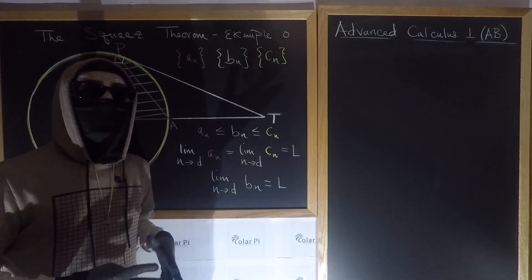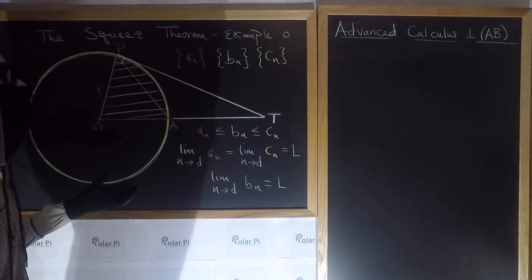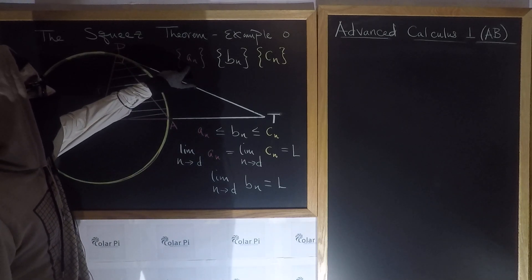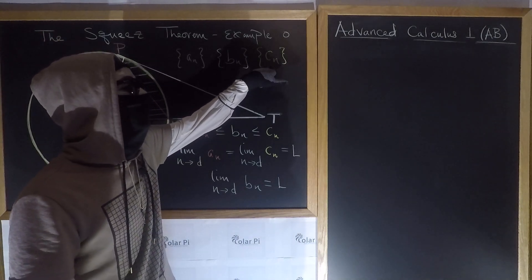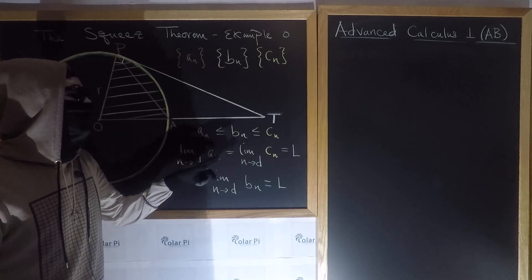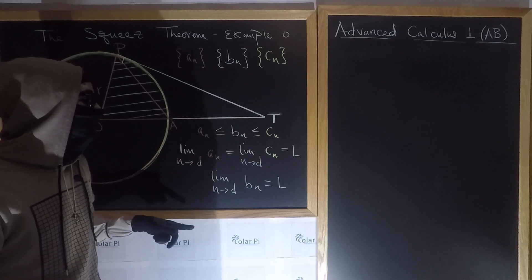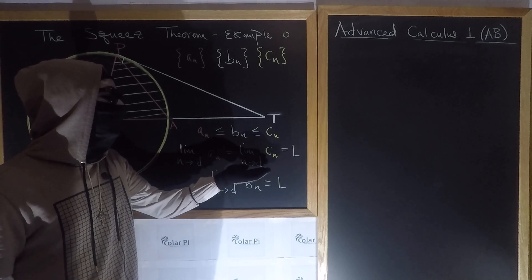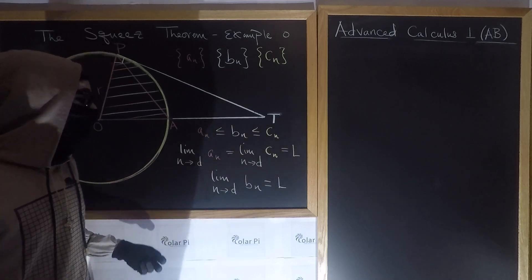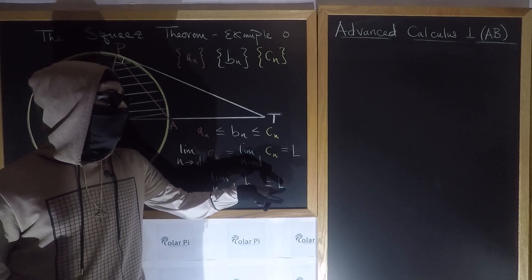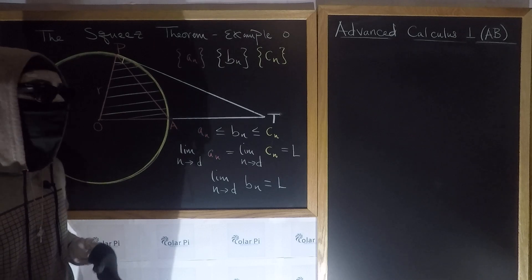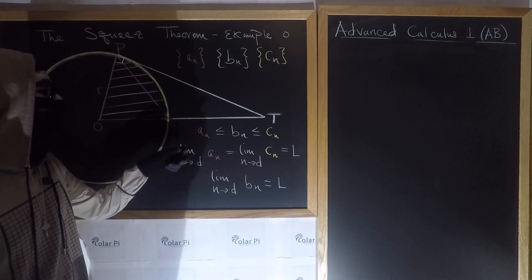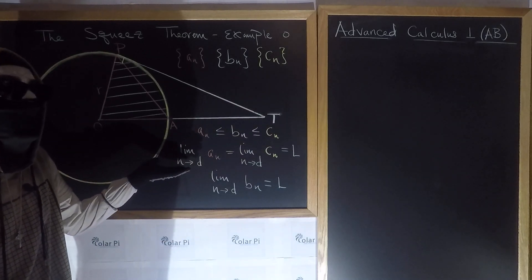The squeeze theorem can be stated both for functions and sequences, and I've stated it here for sequences. What it says — which is practically the same as what it says for functions — is: if we have a sequence a_n, another sequence b_n, and a third sequence c_n, and b_n is squeezed in between a_n and c_n, and the limit as n goes to some number d of a_n equals the limit of c_n — call that limit L — then it must follow that the limit of b_n equals L as well. In other words, if b_n is squeezed between a_n and c_n, then it must have the same limit, so long as a_n and c_n have the same limit as they tend to d.